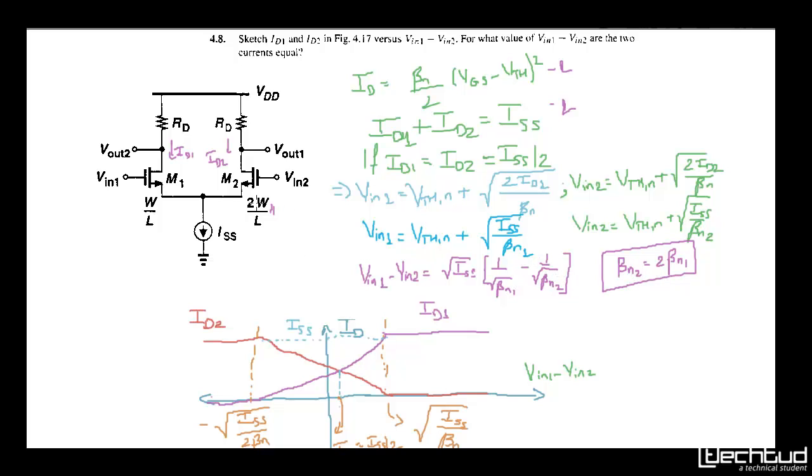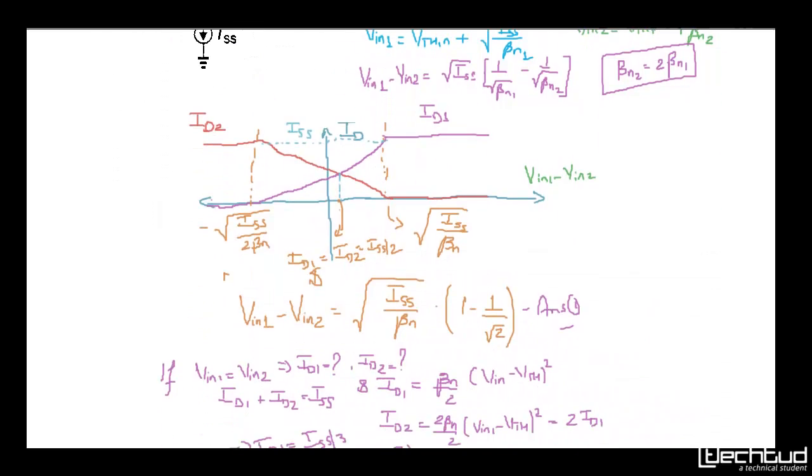So here we know that second transistor is twice the width of first one. So if we substitute, this is the value that we should get.